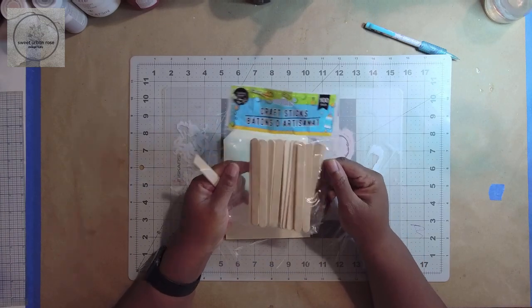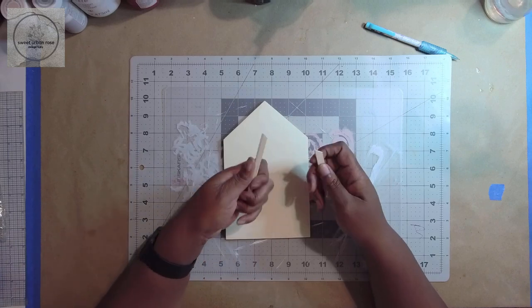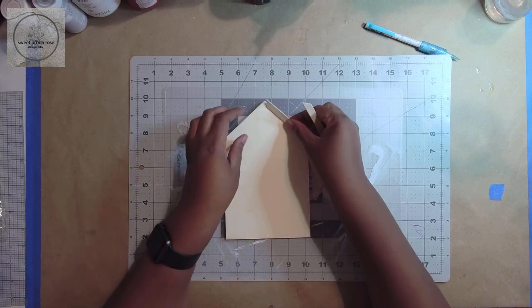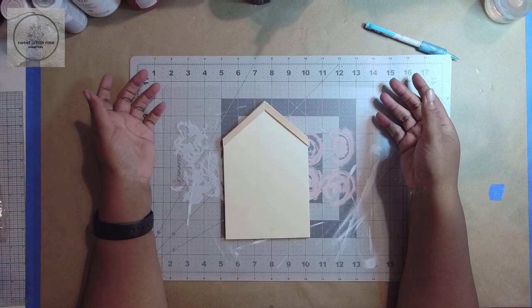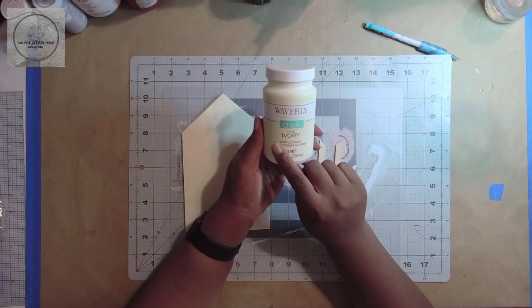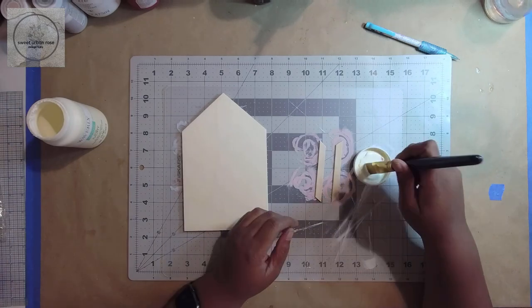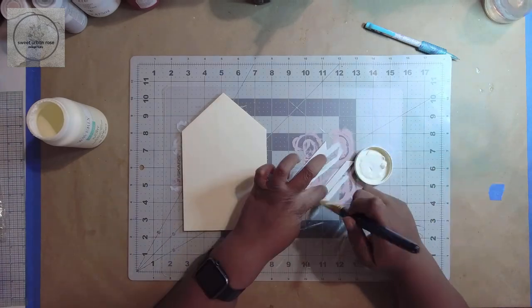Then I trimmed two of these cross sticks down to fit the roof line to give it some dimension. Next, using Waverly chalk paint in ivory, I painted the house and the roof pieces.